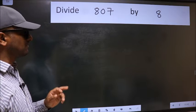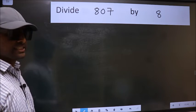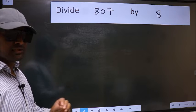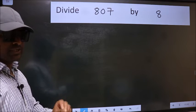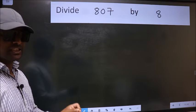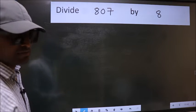Divide 807 by 8. While doing this division, many do this mistake. What is the mistake that they do? I will let you know. But before that, we should frame it in this way.